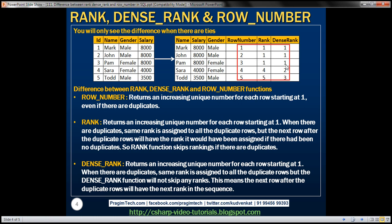The dense rank function, just like the rank function, assigns the same rank where there are ties — so the first three rows all get rank one. But for the fourth row, after the tied rows, it gives a rank of two. It does not skip any ranks. That's the fundamental difference between these three functions.